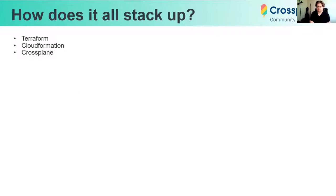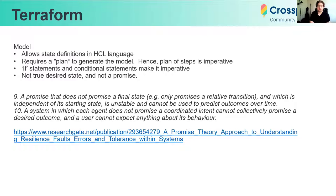How does it all stack up, and how can we apply promise theory to some existing tools? In Terraform, we define our model in HCL. But the challenge in terms of promise theory is we don't know exactly what our model is until we run a plan or apply to generate it. Until then, it's not a true promise.